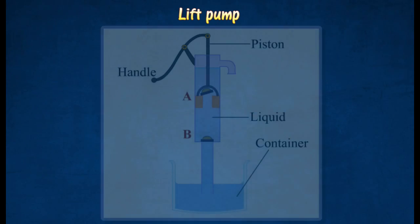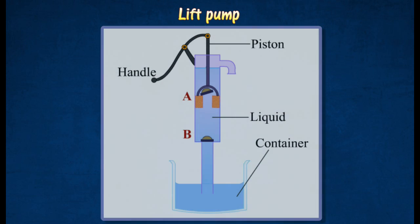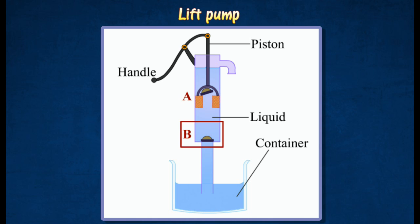The lift pump is usually used to draw out liquids such as kerosene from a tall tin or a tank. It consists of a barrel which has a tight-fitting piston, with a side tube near the top to act as a spout. There are two valves: A, fixed on the piston, and B fixed at the bottom of the barrel.